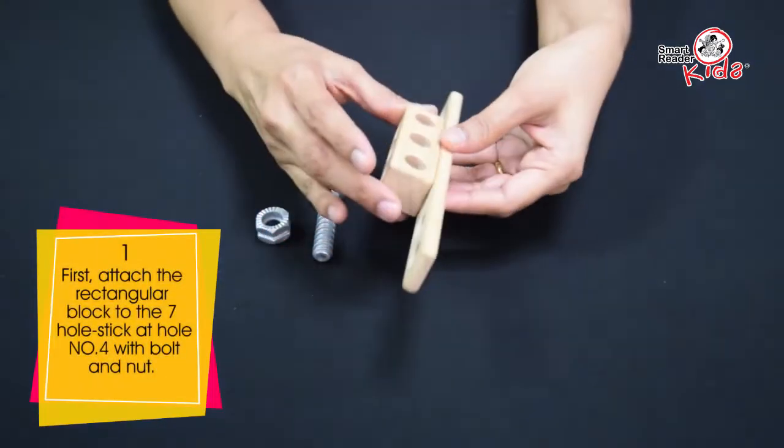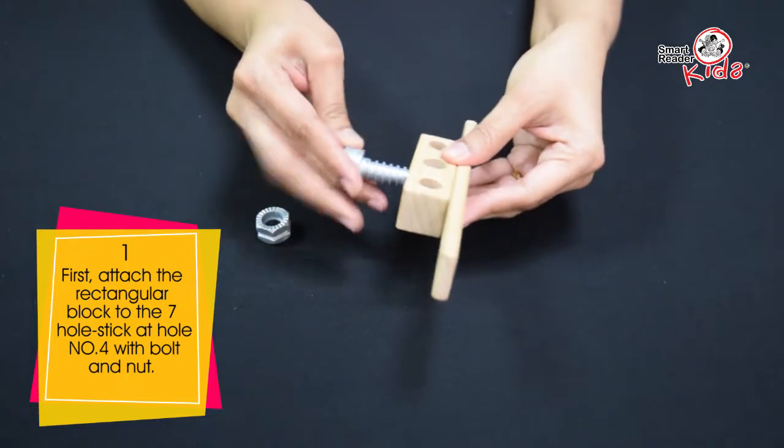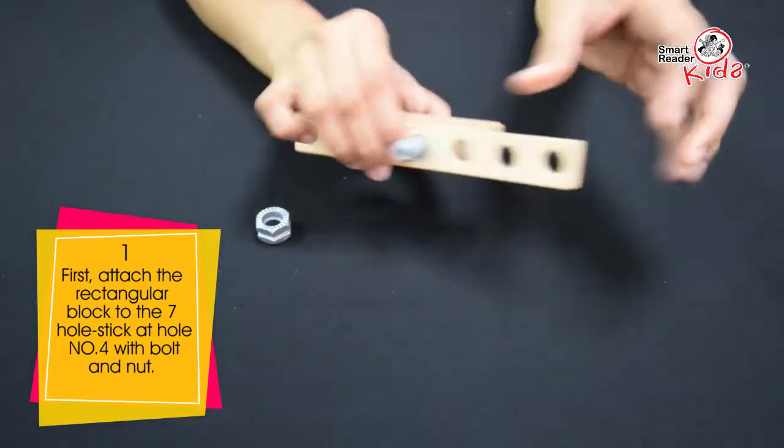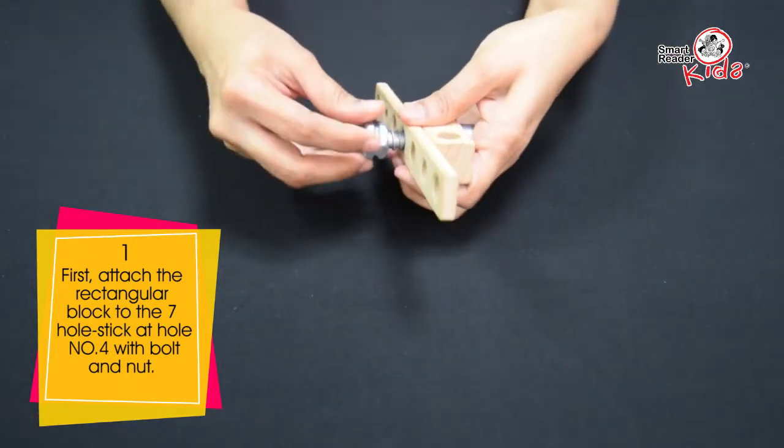First, attach the rectangular block to the 7-hole stick at hole number 4 with bolt and nut.